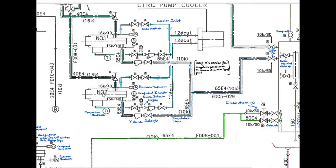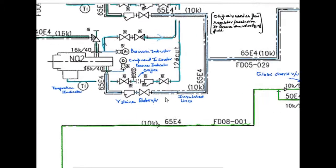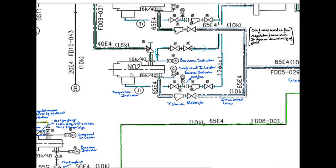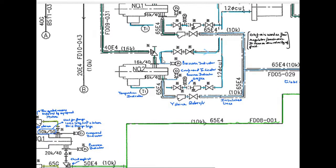In the suction line, you can see, we have a globe valve, we have a Y strainer. And on the suction side, we have a compound indicator. And on the discharge side, we have a pressure indicator. Now, we have a cooler to cool these circulating pumps.